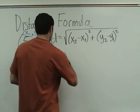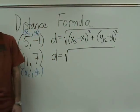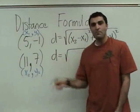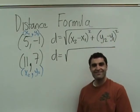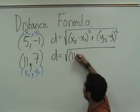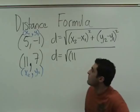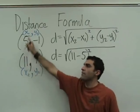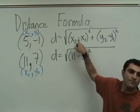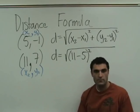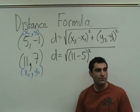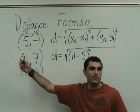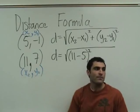Okay, here we go. D equals a long square root. Who can plug it in? Eleven is x2, so it's eleven minus five — eleven is x2, five is x1. It doesn't matter which one you choose as x2 or x1, as long as you have a minus and it's squared. This could have been x2, y2 or x1, y1 — it doesn't matter.